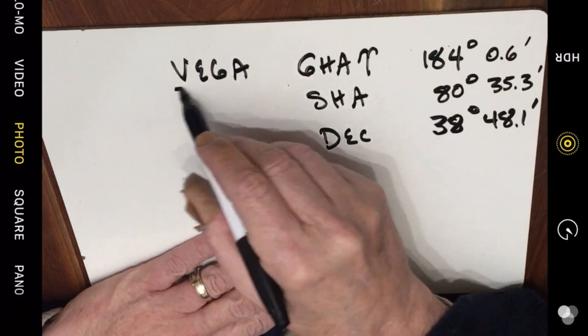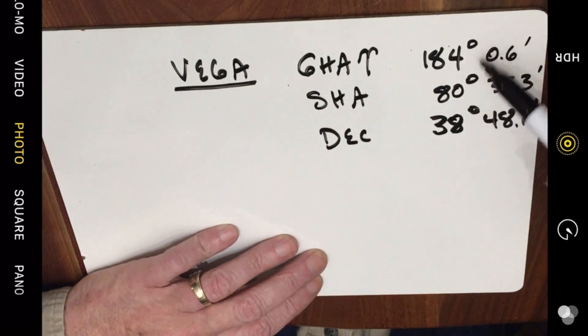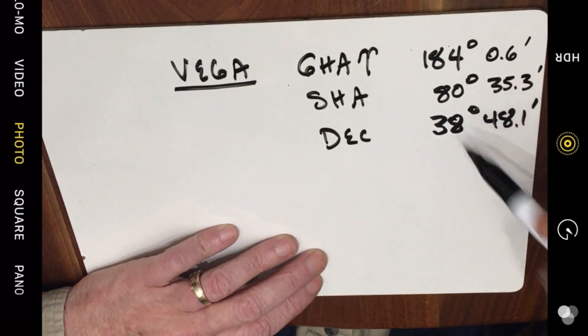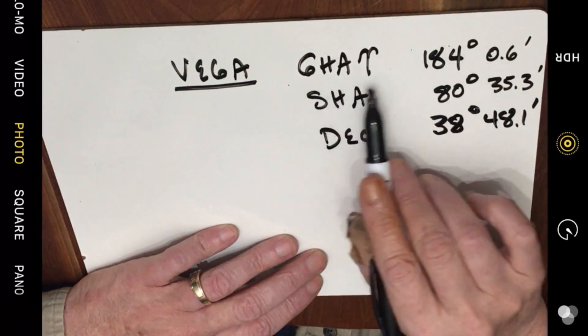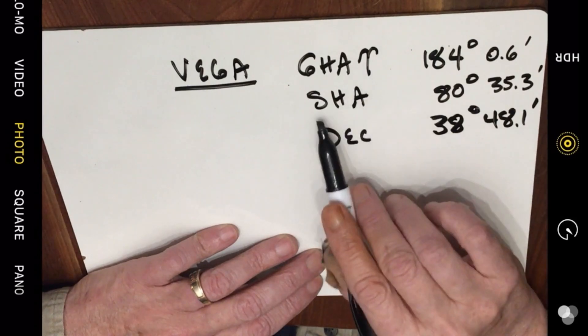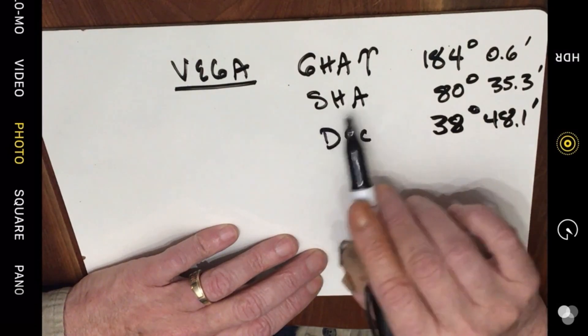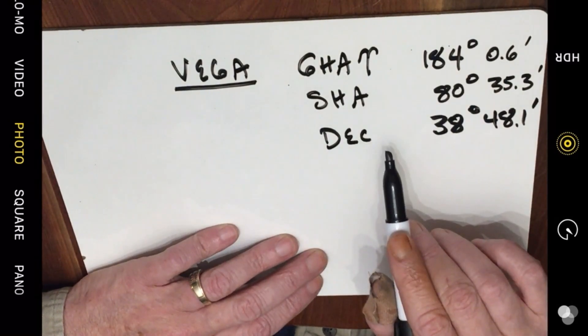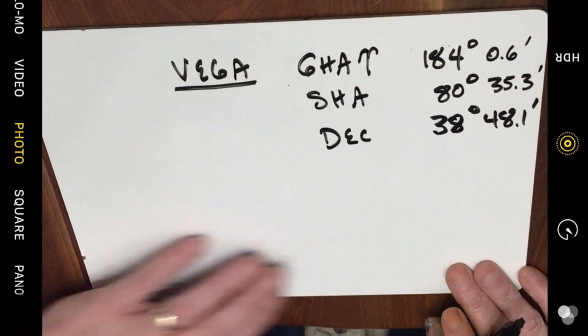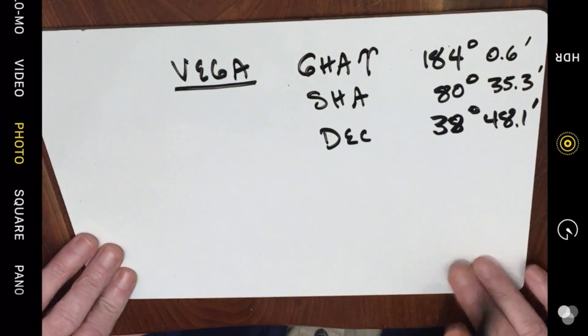So today we're going to look at the star Vega and we have three values here that are essential to find the geographic position of the star. The first one is called the Greenwich hour angle to Aries. The second is called the sidereal hour angle and the last is called the declination. Now there was a little bit of confusion about this, so let's go ahead and see if we can make this a little clearer.